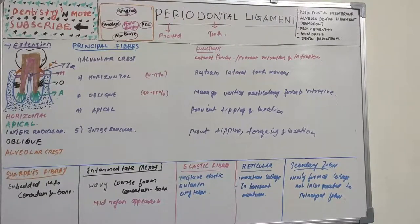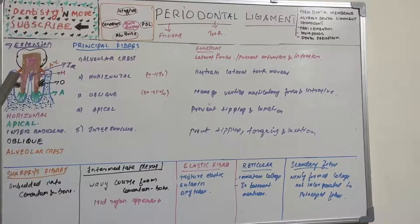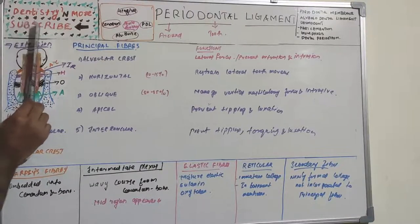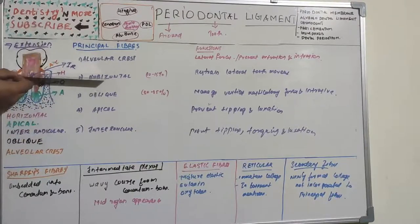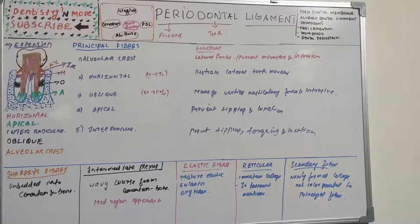The horizontal fibers extend from cementum to alveolar bone in a horizontal direction, at right angles to the long axis of the tooth. They occupy 10 to 15 percent of the coronal root surface.